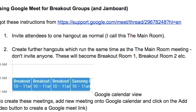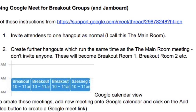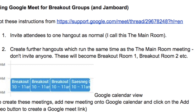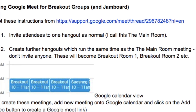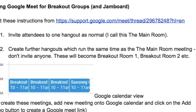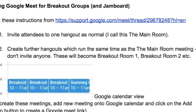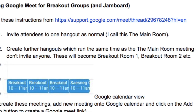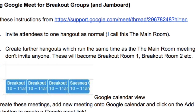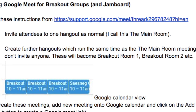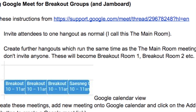So you create a Hangout Meet as you would normally do for a class on your Google Calendar and you call it the main room, and you only give that one to the students. Then you create further Hangouts which run at the same time and you call them breakout room one, breakout room two, but you don't give those details to the students just yet.